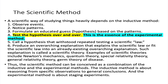If you come up with a theory, you produce an overarching, general explanation of how things work — this is what we call a scientific theory. Examples of scientific theories include Newton's mechanics, quantum theory, special relativity theory, general relativity theory, and the germ theory of disease.